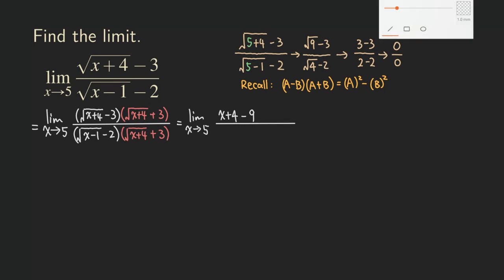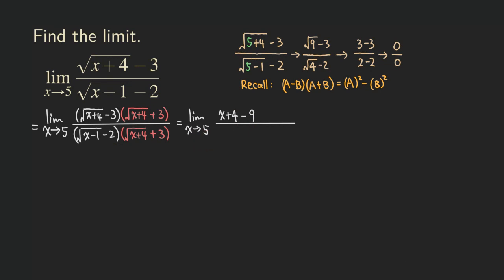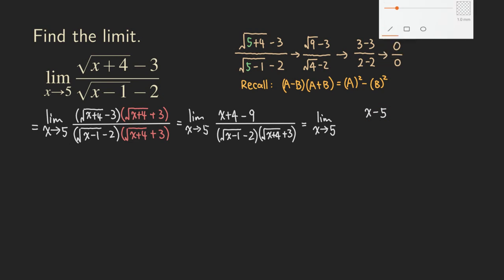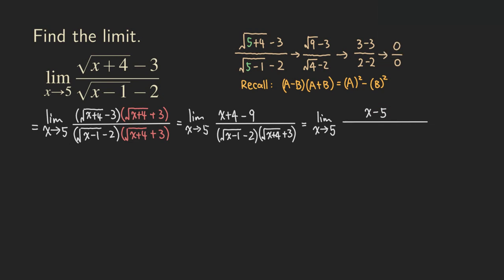For the denominator, we actually do not need to multiply it out, so just leave it as is. We have the square root of x minus one, then minus two — just copy. Now we have this expression. If we clean up the expression at the top, then we are going to be getting x minus five — that's four minus nine. And then in the denominator, we are still getting the same stuff, so just copy it one more time.